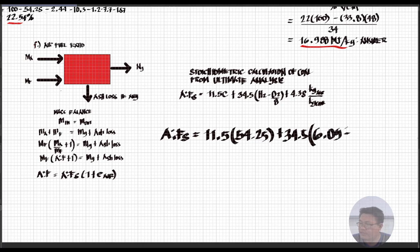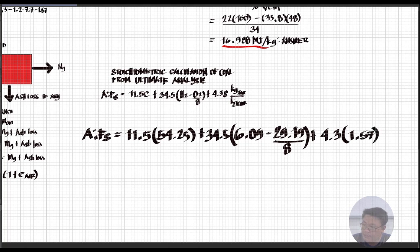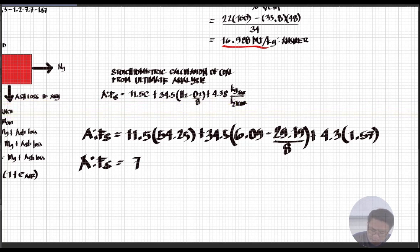Then plus 4.3 times the sulfur value of 1.57. The stoichiometric air-fuel ratio is now equal to 7.148 kilograms of air per kilogram of coal.